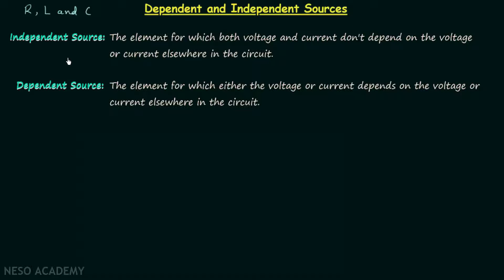Let's begin with independent source. An independent source is the element for which both voltage and current do not depend on the voltage or current elsewhere in the circuit. Whenever the voltage across the element or the current through the element is not depending on any other voltage or current in the circuit, we call the element an independent source.